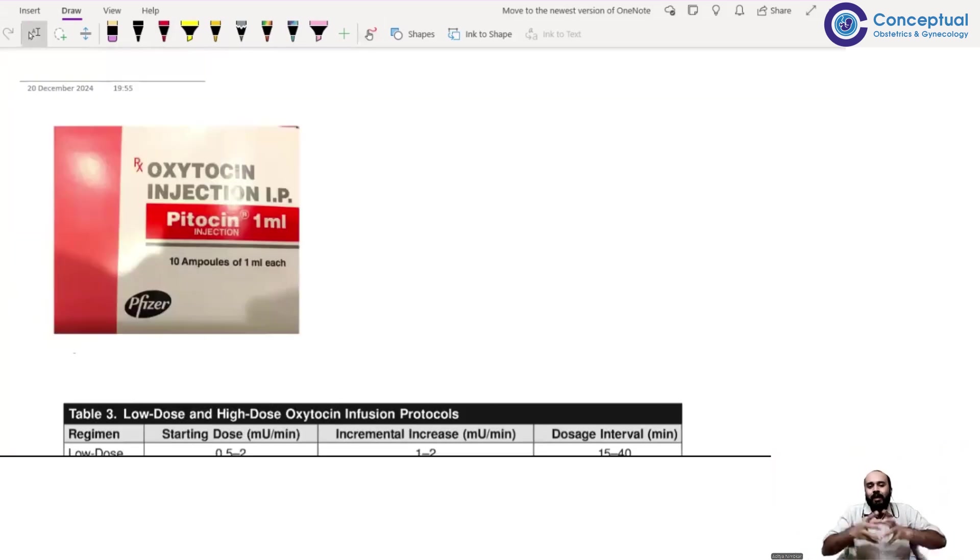The first thing before I talk about that is in India, how and what is the oxytocin that we get. In India, Pfizer company makes one of the most common brands for oxytocin, which is Pitocin. Pitocin is very commonly used. It was used in my residency and is being used in the current hospital where I work. Pitocin comes in 1 ml and we also get 0.5 ml, both are available from the same company.